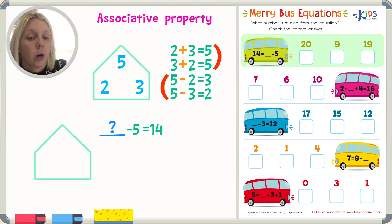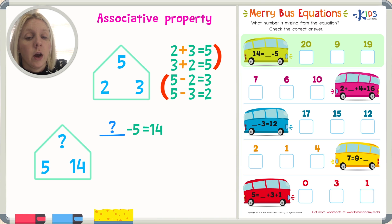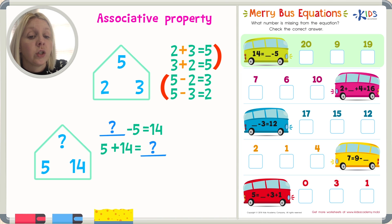Remember, in a subtraction problem, the biggest number comes first. I don't know what that biggest number is, so in my house I'm going to put a question mark at the top, because that's where I keep my biggest number. I do know the number five and I do know the number fourteen. I need to take this unknown number and put it over to the right off by itself. If the biggest number is off to the right, then I know it's going to be an addition problem. I know five and fourteen, so I'm going to add those together: five plus fourteen equals what?